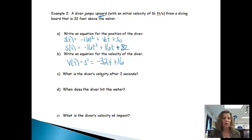Then the next question, what is the diver's velocity after two seconds? So we're looking for the velocity after two seconds. And since I already nicely wrote that, I know I'm going to plug two into the velocity formula. So negative 32 times 2 plus 16 gives me an answer of negative 48 and the units that I'm measuring in will be feet per second.